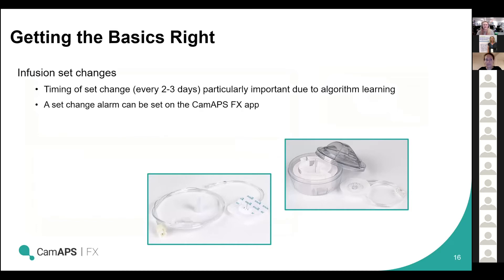Another thing that's really important — although it sounds really basic — is to make sure you're still changing your infusion sets regularly, every two to three days depending on which type of set you use. It's particularly important with closed loop systems because of the way the algorithm learns. This algorithm is predictive and adaptive, so if you're leaving a set in for four or five days and absorption is not so good on the fourth or fifth day, that will affect the algorithm learning. Within the app alerts, right at the bottom, you can set an alert to remind you to change your set after two or three days.